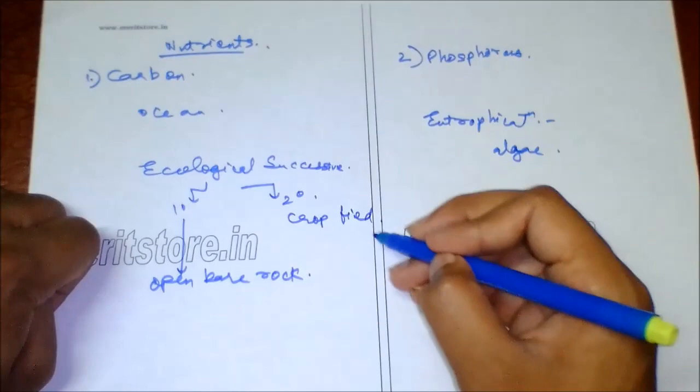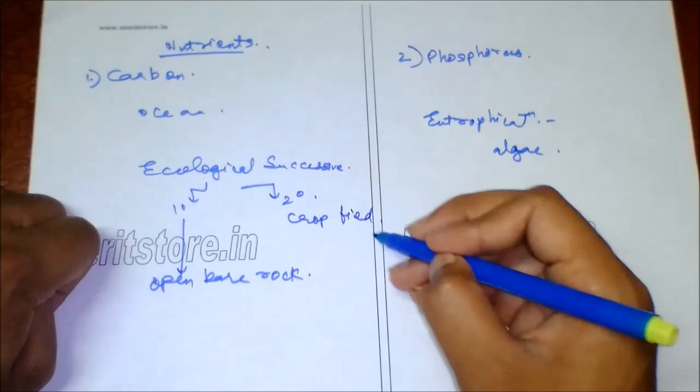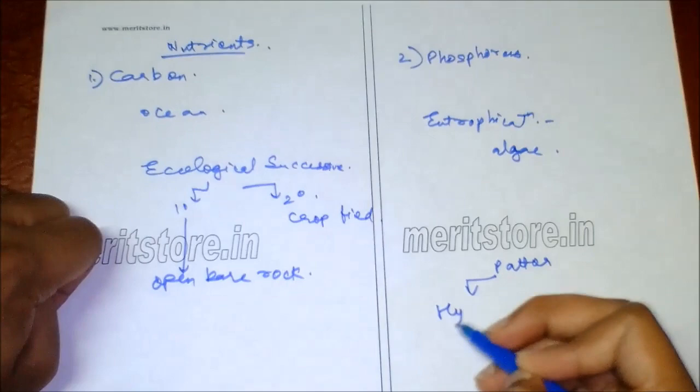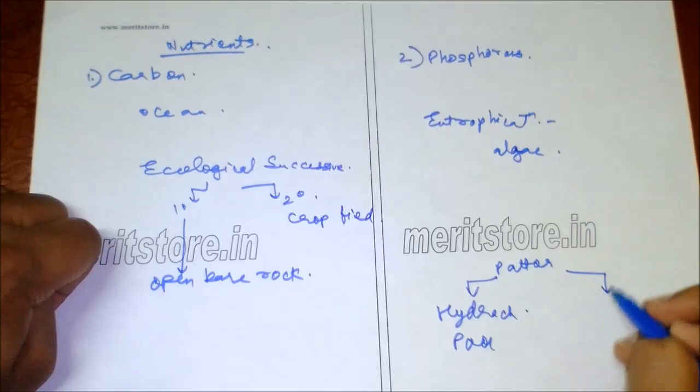The pattern of ecological succession is hydrarch succession, which is a hydrosere. Example is a pool. And there is xerarch succession, which is a xerosere, seen in desert areas or rock.